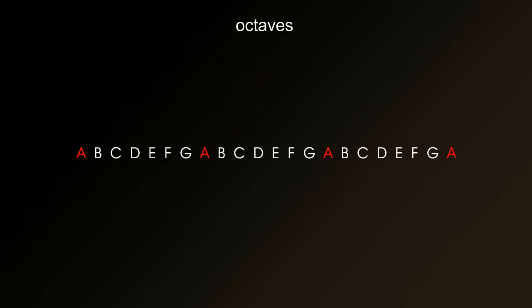An octave is the name given to the gap, or the interval, between two notes with the same name. So you can have an octave up or an octave down. An octave occurs then, anywhere the note repeats itself, for example from A to A.